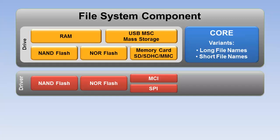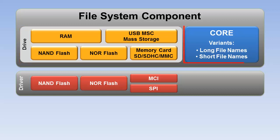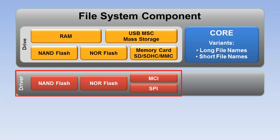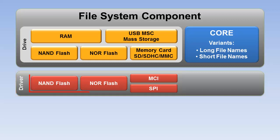The file system component allows embedded applications to create, save, read and modify files in storage devices such as RAM, flash memory, memory cards or USB sticks. These storage devices are accessed and referenced as drives. Multiple drives of the same type are supported — for example, you might have two memory cards in your system. The file system core is thread-safe, supports simultaneous access to multiple drives and uses a FAT file system available in two file name variants: short 8.3 file names and long file names with up to 255 characters. Drivers are provided to access the physical media, for example NAND and NOR flash chips or memory cards using MCI or SPI.